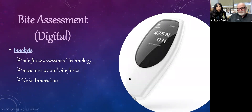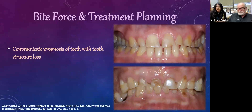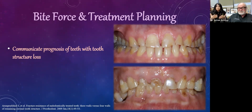This next section on bite force and treatment planning is probably my favorite part of the presentation. These are all questions I ask myself when treating patients in prosthodontics, and questions that residents and undergraduate students frequently ask. One key question bite force measurement helps answer: what is the prognosis of a tooth with very limited tooth structure? The answer depends on the amount of sound coronal tooth structure — ideally 1.5 to 2 mm of ferrule circumferentially.